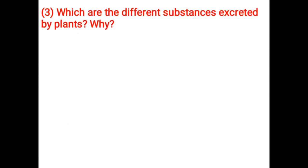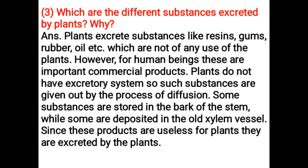Which are the different substances excreted by plants and why? Plants excrete substances like resins, gums, rubber, oil, etc., which are not of any use to the plants. However, for human beings, these are important commercial products. Plants do not have an excretory system, so such substances are given out by the process of diffusion. Some substances are stored in the bark of the stem, while some are deposited in the xylem vessel. Since these products are useless for plants, they are excreted.